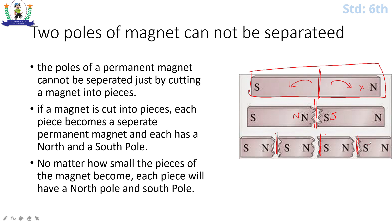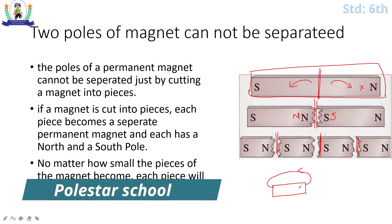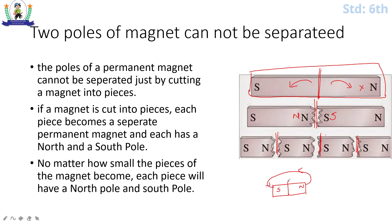It will create a magnetic field from north and it will end to the south. If you break it from in between, it will create the same magnetic field from another place. So likewise, when you break a magnet from any place, it will show its north and south. So poles of a permanent magnet cannot be separated just by cutting a magnet into pieces. If a magnet is cut into pieces, each piece becomes a separate permanent magnet and has a north and south pole. No matter how small the pieces of magnet become, each piece will have a north and south pole.